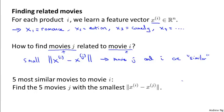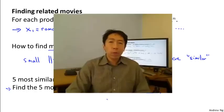So just to recap, if your user is looking at some movie i, and if you want to find the five most similar movies to that movie in order to recommend five new movies to them, what you do is find the five movies J with the smallest distance between the features between these different movies. And this could give you a few different movies to recommend to your user.